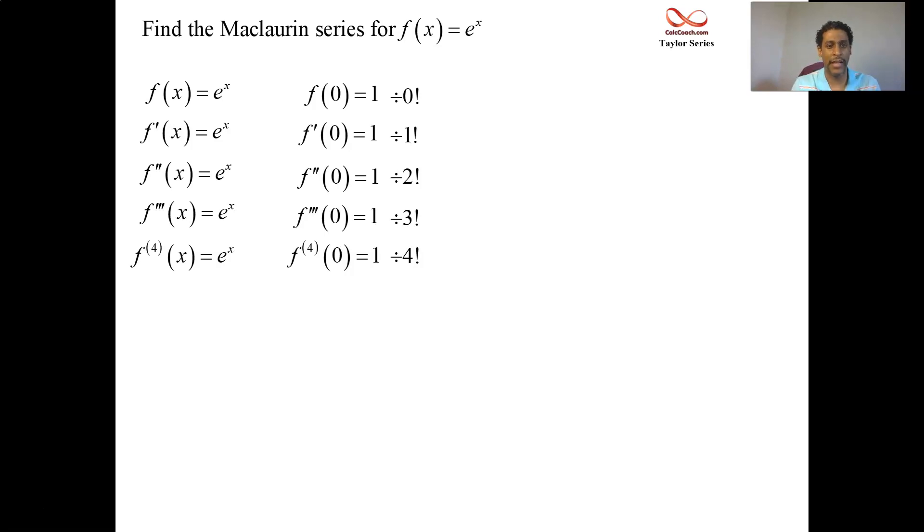Because if you're going to find the pattern, it's best to leave it in some kind of format, especially a format that involves n. And so we get a 1, another 1. Then we get a half, or 1 over 2 factorial, we'll write it as 1 over 3 factorial, and then 1 over 4 factorial. So we have on hand the first 5 coefficients.